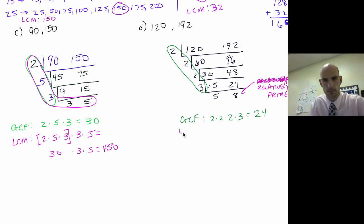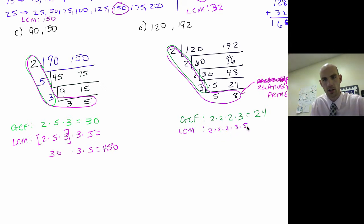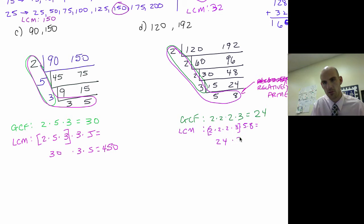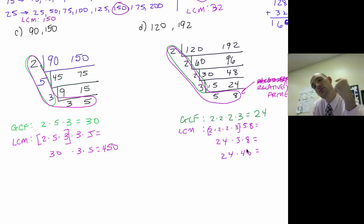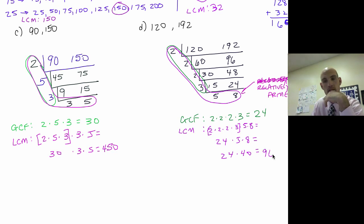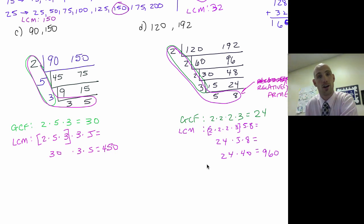Now the least common multiple uses the full L-shape: 2 times 2 times 2 times 3 times 5 times 8. I know that part is 24, so it's 24 times 5 times 8 = 24 times 40. That's 20 times 40 = 800, plus 4 times 40 = 160, so 960. If I had to list all those multiples out, I'd have been listing for a long time. That's the upside-down birthday cake method for GCF and LCM. Thanks for watching!